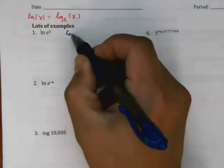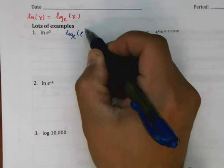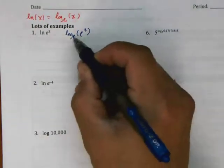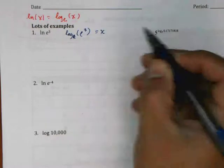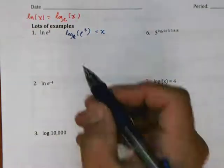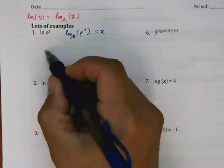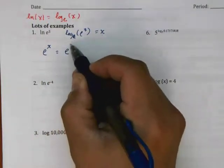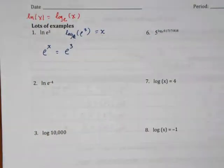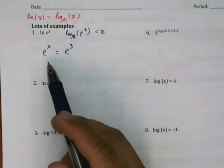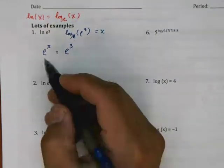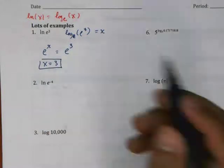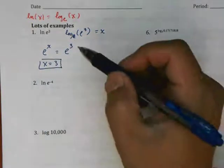So we can rewrite this as log base e of e to the third. Since we don't know what this equals, we'll set it equal to x and solve for x. Remember the base is e, so e to the x equals e to the third. Therefore x must equal 3.